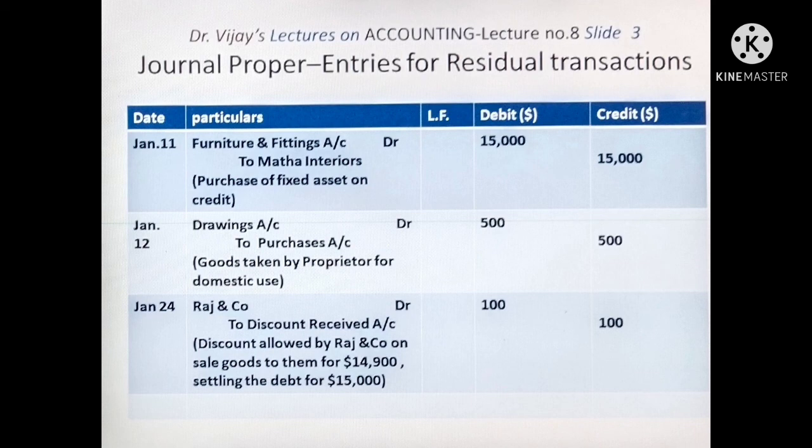The residual transactions are to be posted in the Ledger like any other journal entry. Here, three residual transactions are given. First: Furniture and Fittings Account debited to Madhaya Engineers — posted in debit side of Furniture and Fittings Account and credit side of Madhaya Engineers Account. Second: Drawings Account debited to Purchases — posted in debit side of Drawings and credit side of Purchases Account. Third: Rajan Company debited to Discount Received — posted in debit side of Rajan Company and credit side of Discount Received Account.